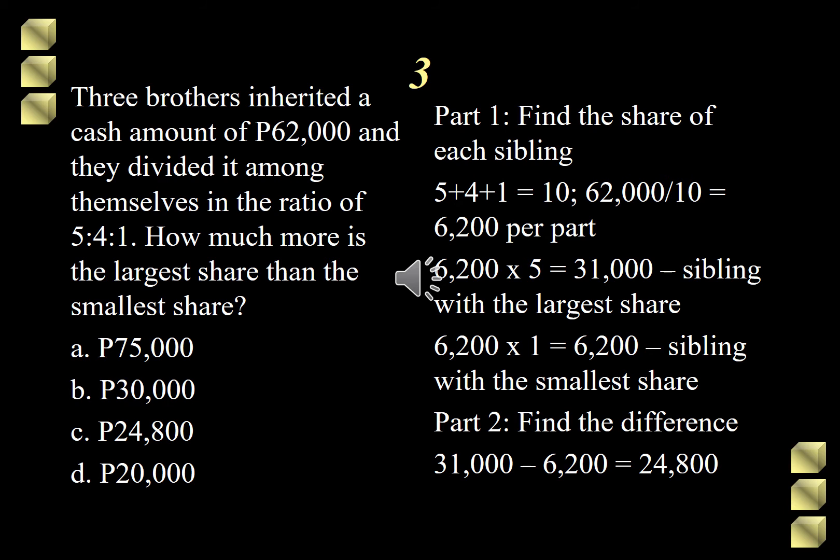Moving on to part 2 of this problem, I need to find the difference between the largest and the smallest share. Simply subtract 31,000, that's the largest share, minus 6,200, the smallest share. That gives me 24,800. Hence, the correct answer is letter C, 24,800.